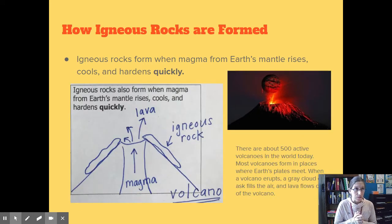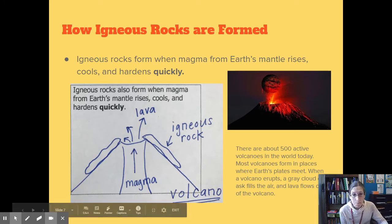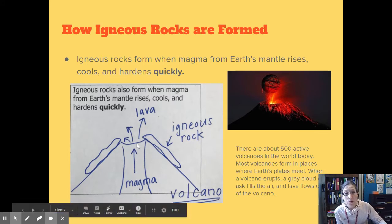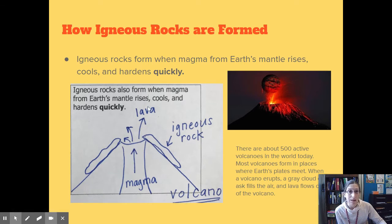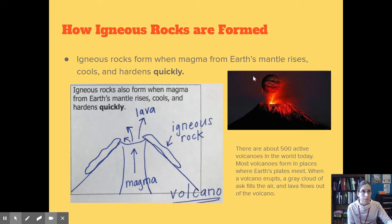Igneous rocks can also form quickly. They can form when magma from the earth's mantle rises, cools, and hardens quickly — and this is called a volcano. Magma comes up through the crust quickly, turns into lava, and cools and hardens very fast. Here is a picture of a volcano, and that is another way that igneous rocks are formed.